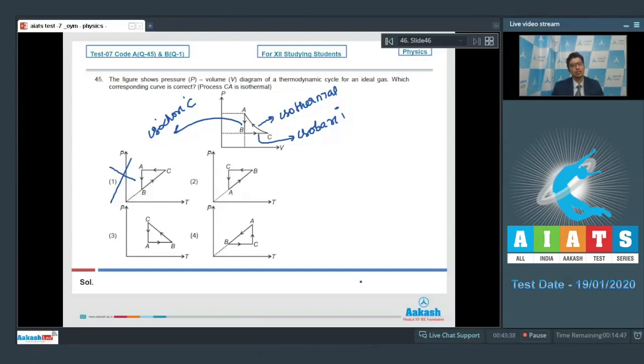Dear students, we can also see in the isothermal process A to C that the pressure is increasing from C to A, while in option number 2 from C to A pressure is decreasing, therefore it cannot be our answer. While in the third option as well from C to A pressure is decreasing, therefore third option cannot be our answer. In fourth option from C to A the pressure is increasing, so it can be our answer.